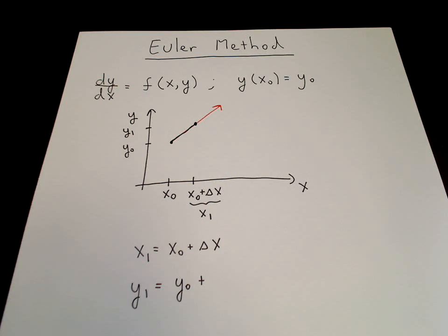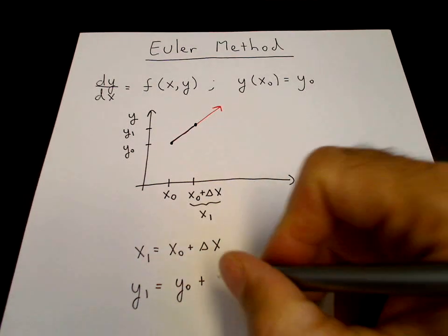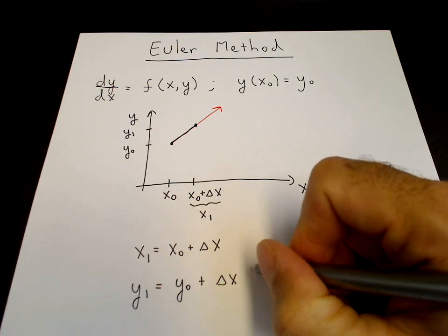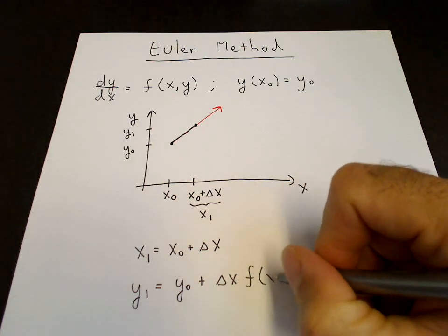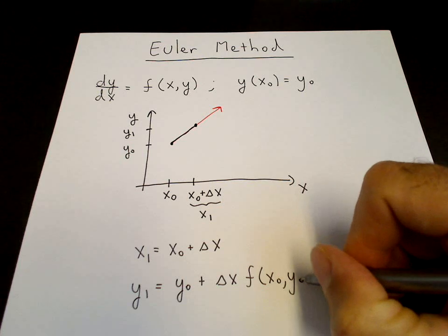So y₁ will be the initial value of y plus the slope, Δy/Δx, times Δx gives us our Δy. Δy/Δx, the slope is the slope of the tangent line is f(x₀, y₀) times Δx. So this is Δx times f(x₀, y₀).